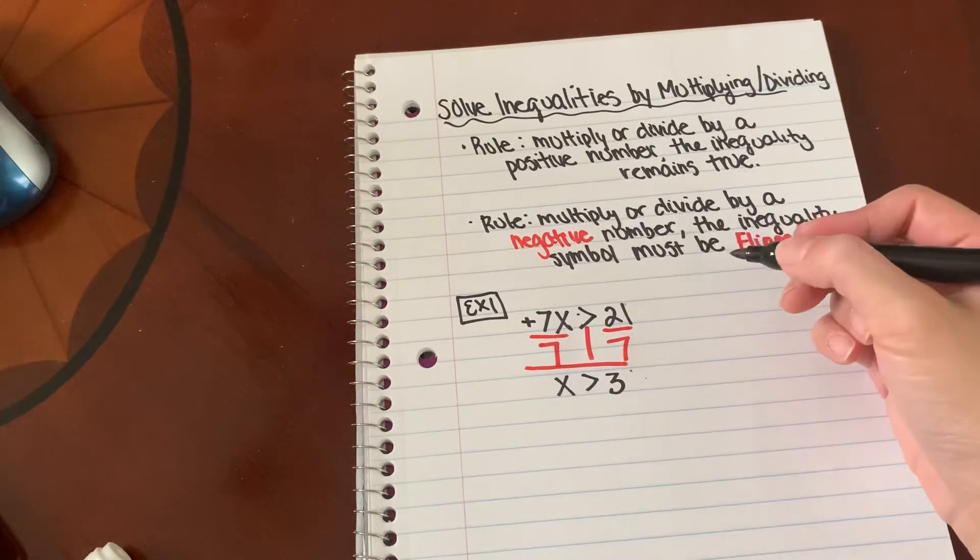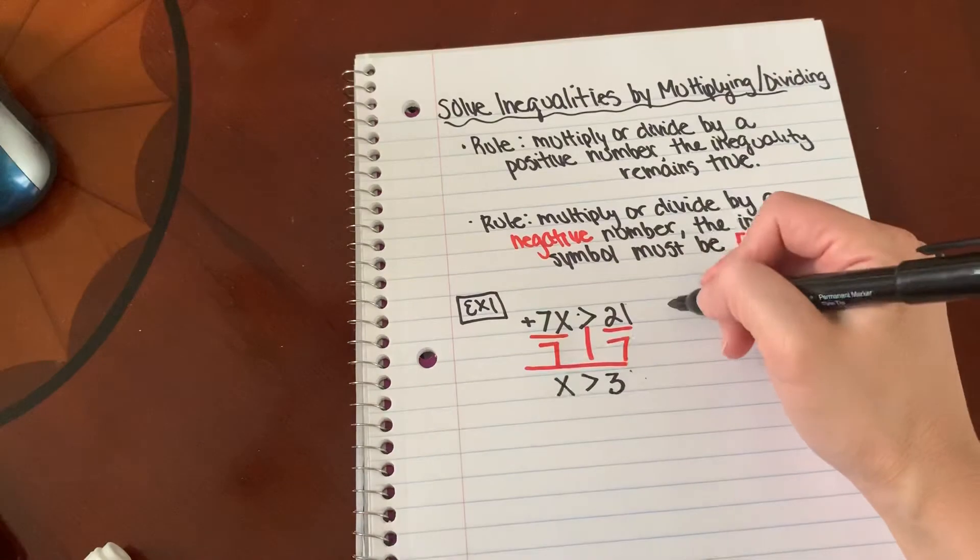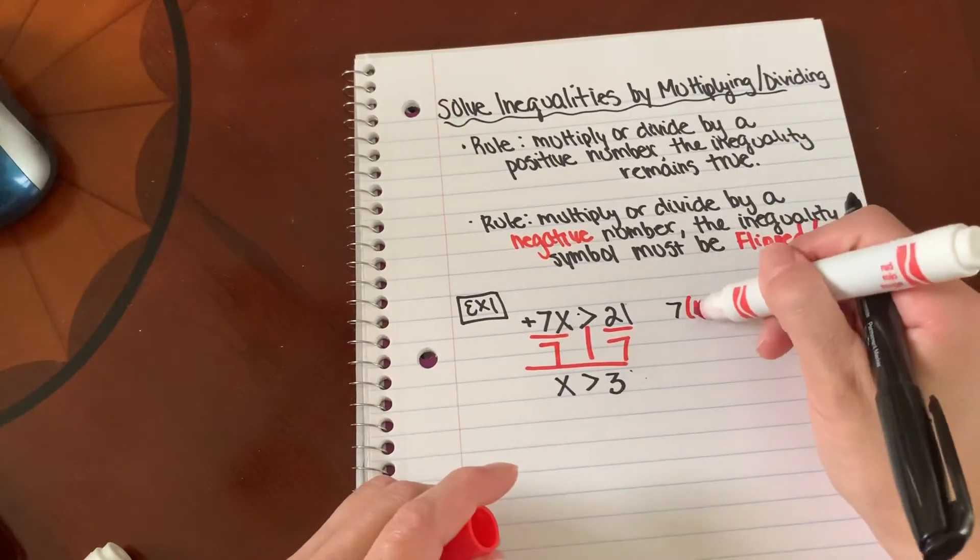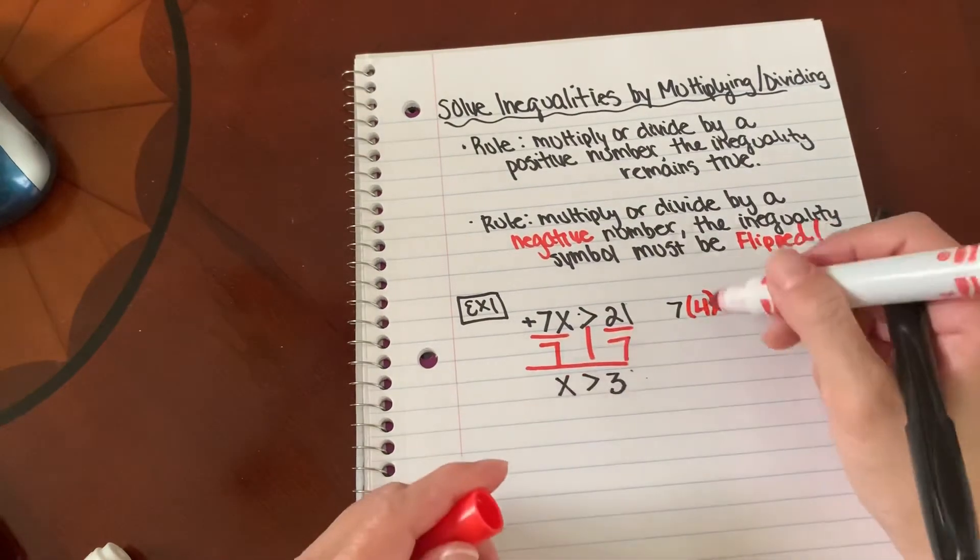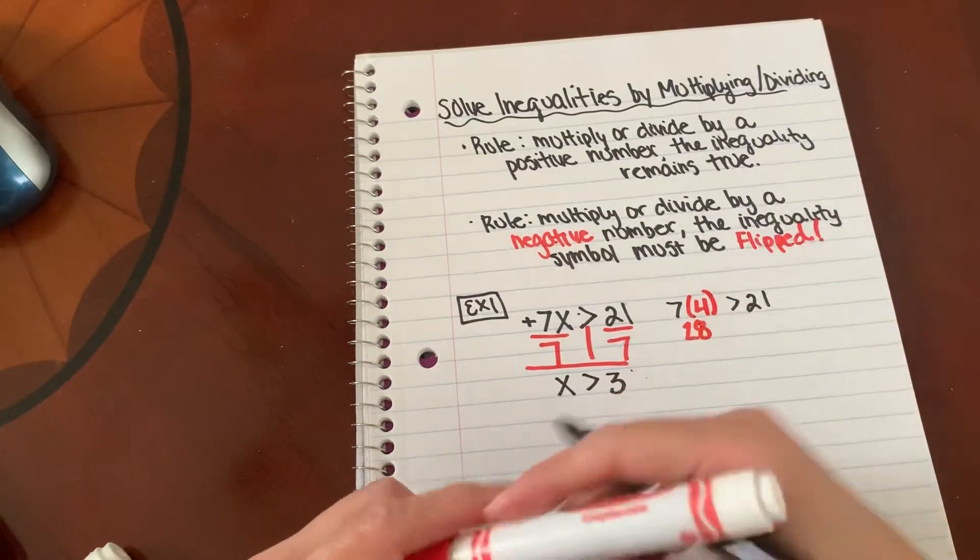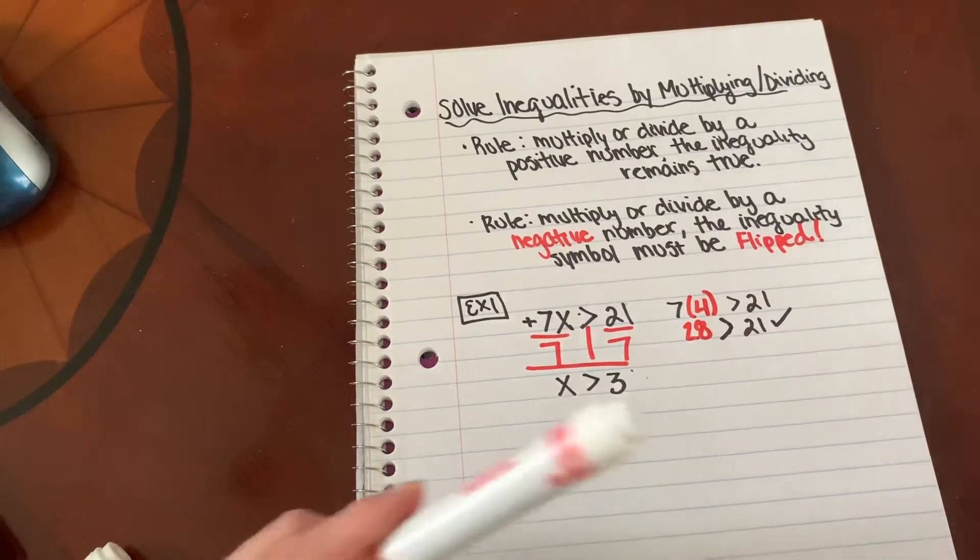And again, we can go ahead and check this. What number is greater than 3? Well, I can pick 4. So if I multiply 7 times 4 is greater than 21. Well, 7 times 4 is 28, and that is going to be greater than 21. That remains true.